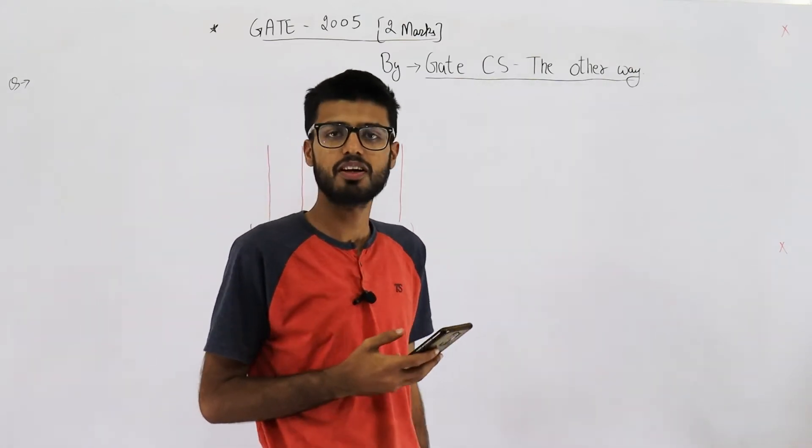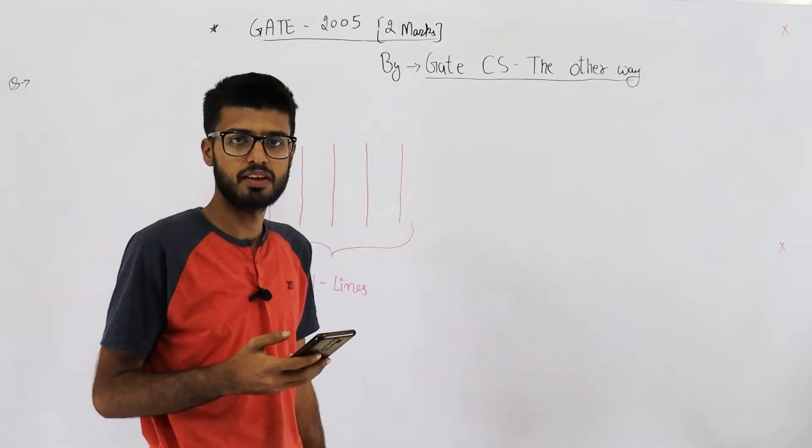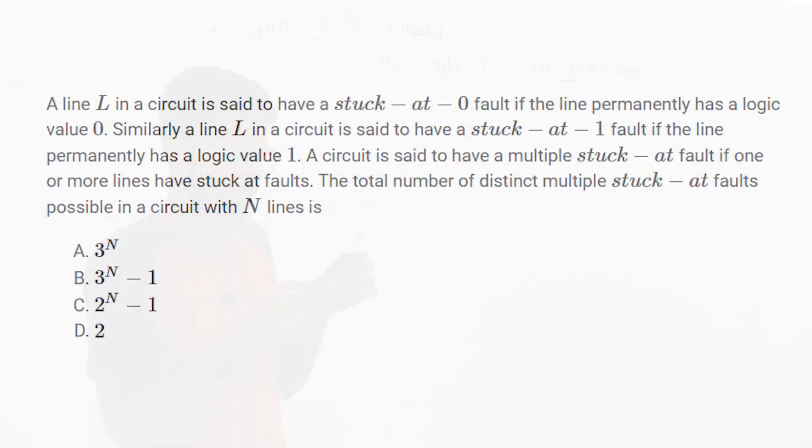Hello, this question is from GATE 2005 exam. It's also a 2-mark question. The statement says: A line L in a circuit is said to have a stuck-at-0 fault if the line permanently has a logic value zero. Similarly, a line L in a circuit is said to have a stuck-at-1 fault